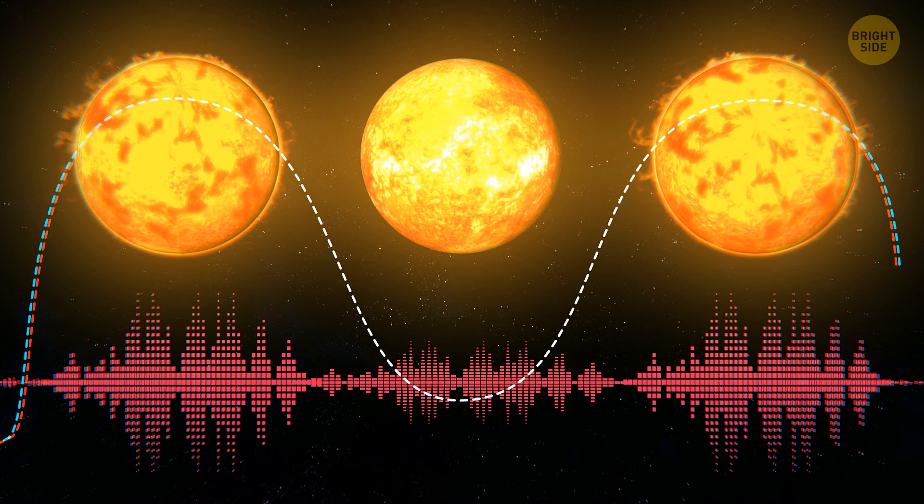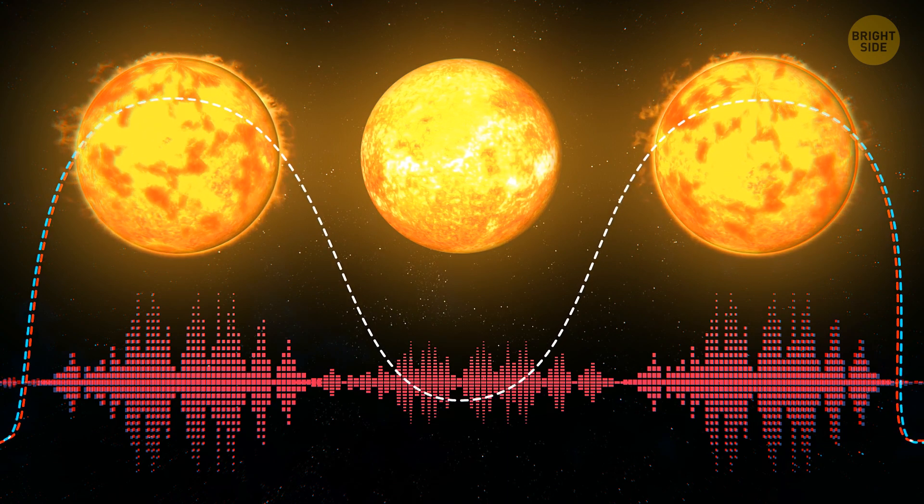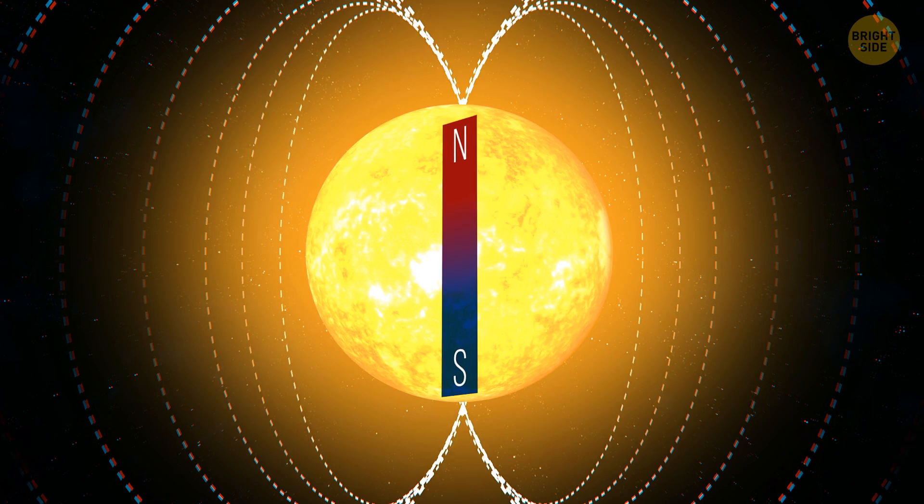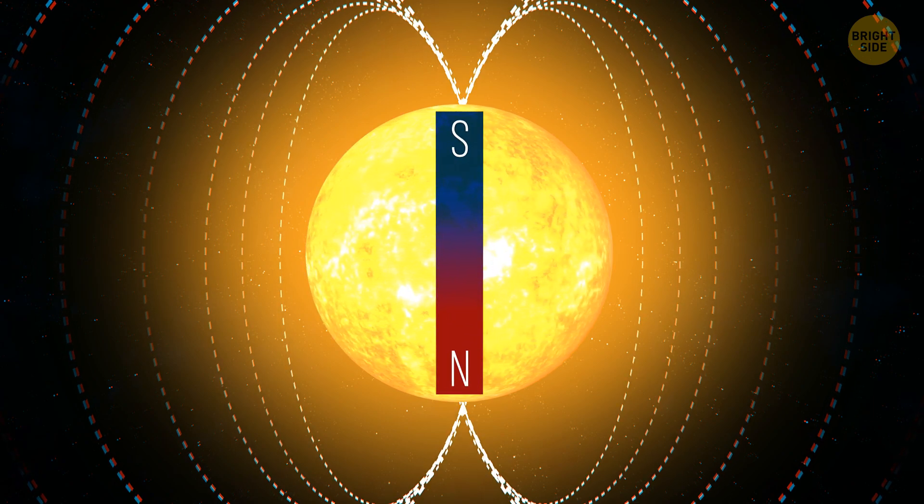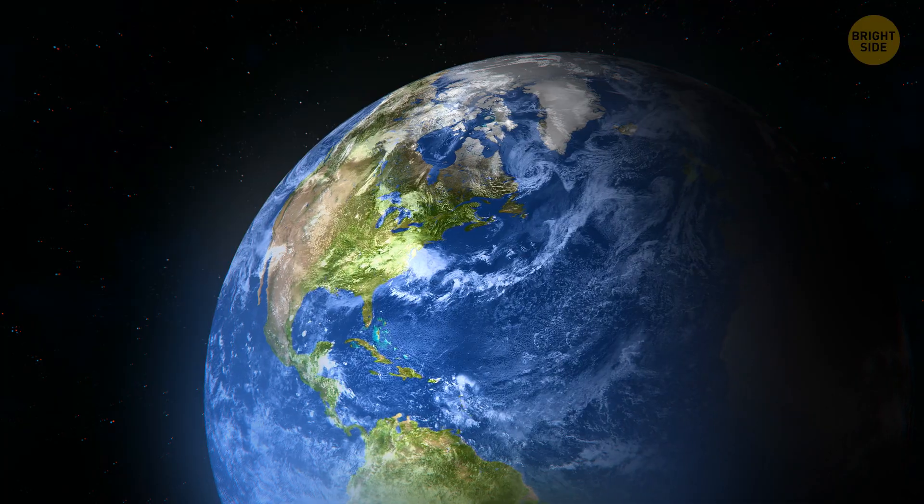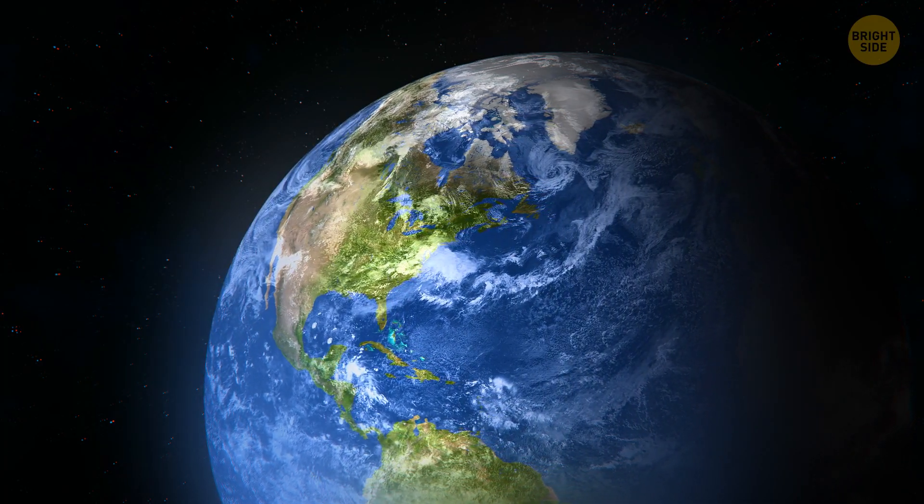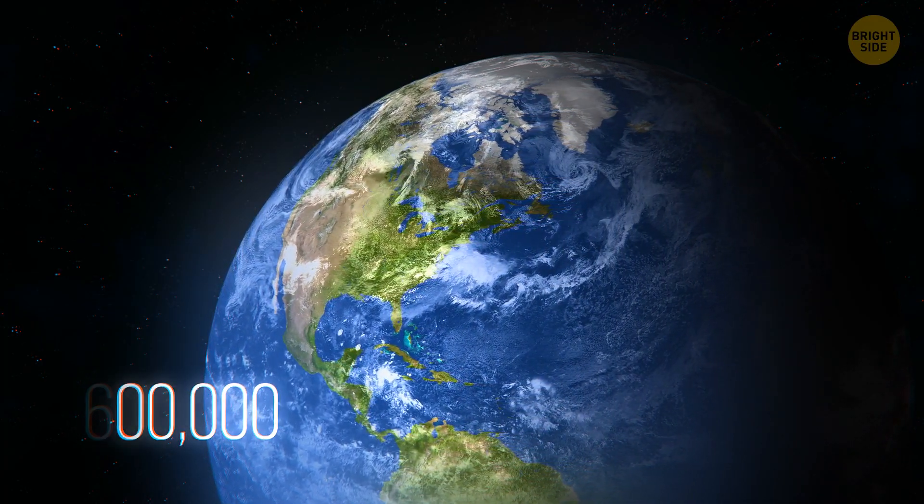They do know that, with each cycle, the sun reverses its magnetic poles. That in itself is pretty astounding, especially when you consider that Earth hasn't reversed its magnetic poles in the last 600,000 years.